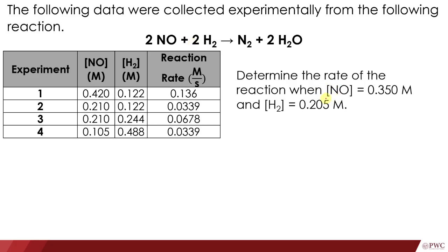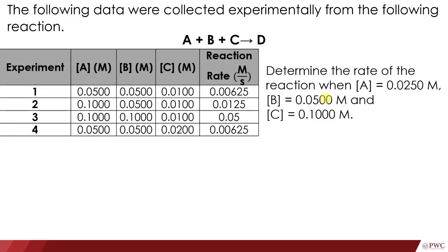Let's have another item about chemical kinetics, about rate law. So here we have three reactants A, B, and C. We did experiments with different concentrations of A, B, and C, and then determined the rate of the reaction. We are tasked to determine the rate of the reaction when the concentration of A is 0.0250 molar, B is 0.0500 molar, and C is 0.1000 molar. We are going to use the rate law.